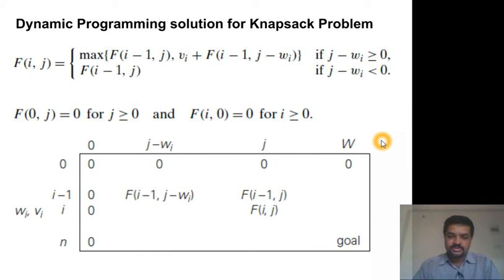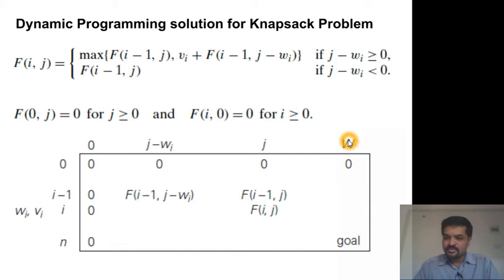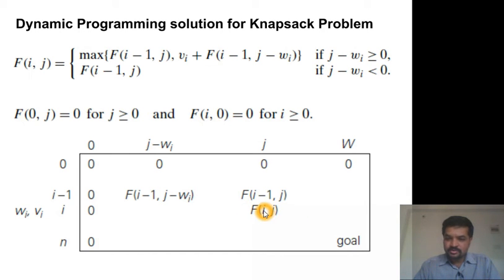Just like most dynamic programming solutions, the recurrence for this DP solution is not very intuitive. We want to find the best fit for n items with a knapsack capacity of w. We are filling a table where a cell f(i, j) is defined as follows: we have items labeled from 1 to n and weights discrete from 0 to w. So f(i, j) is the optimal solution for the first i items allowed to choose with the knapsack capacity of j.